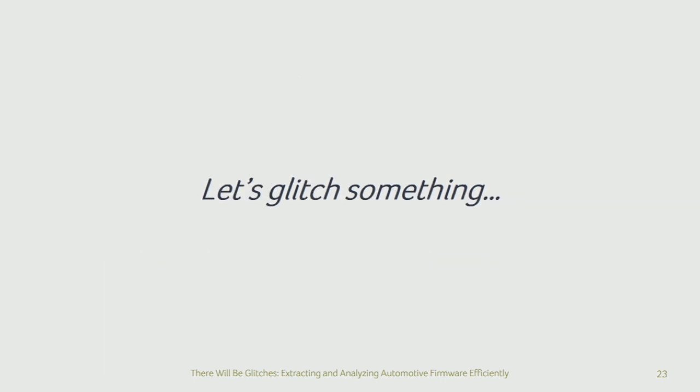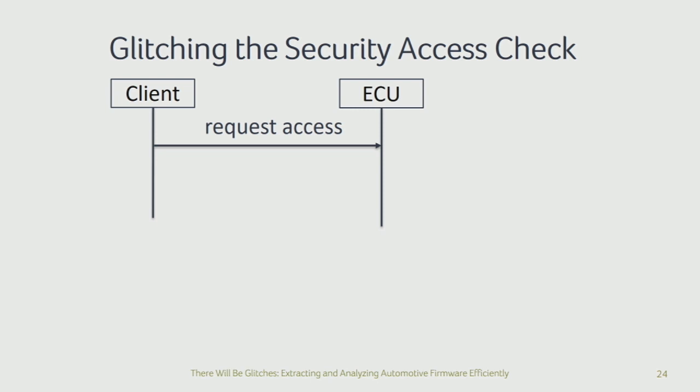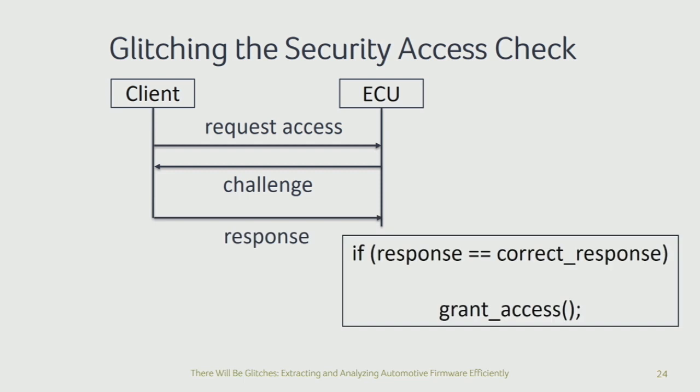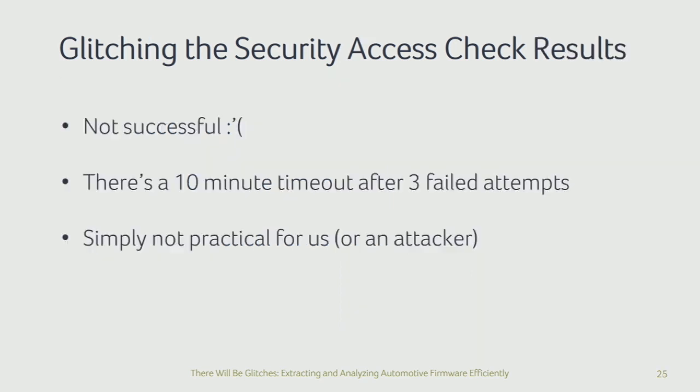Enough of the theory — let's do something useful and start glitching something. The security access check is used to protect the reading and writing of memory. Typically the client requests access, gets a challenge back, performs a transformation on this challenge using a secret, and sends the response back. The ECU checks if the response computed on their end matches, proving that the valid user and the ECU share the same secret. If we remember that we can change instructions, it's probably possible to change the intended behavior of that conditional statement by injecting a glitch at that moment in time — and that's exactly what we started doing.